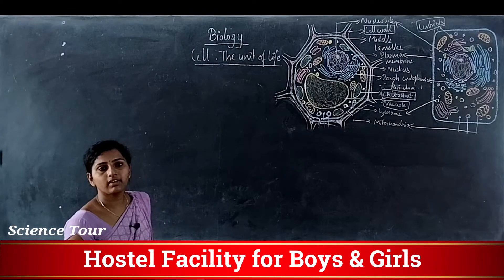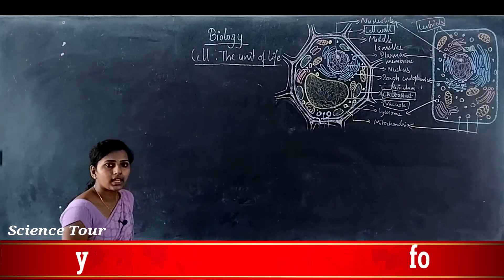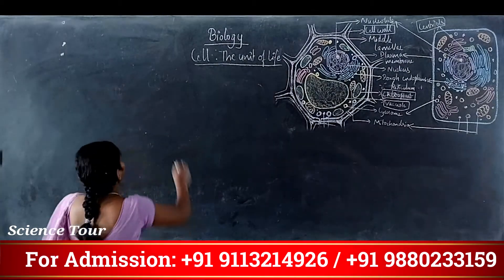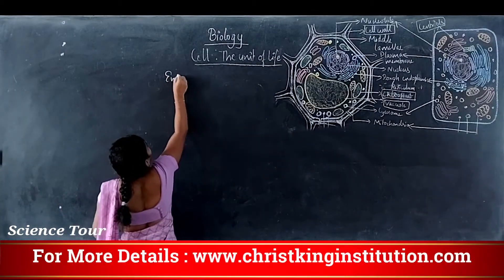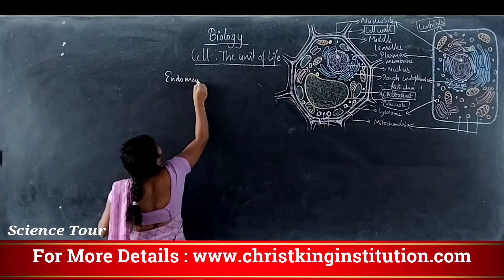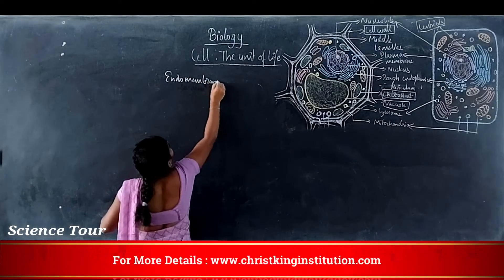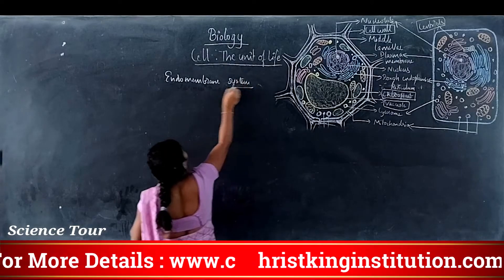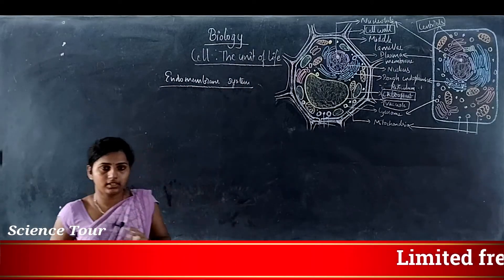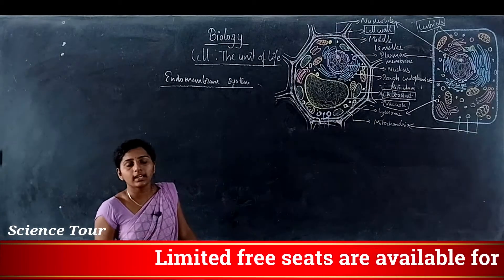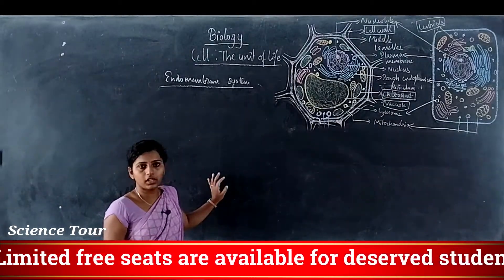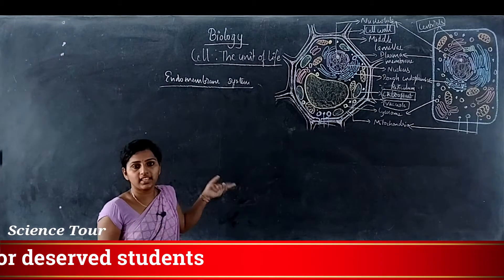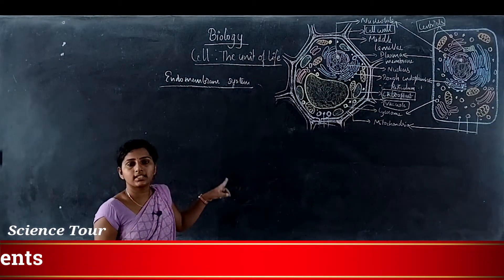Today we are going to study about the endomembrane system. The eukaryotic cell contains different types of organelles, and each organelle is different in its structure as well as in its function.